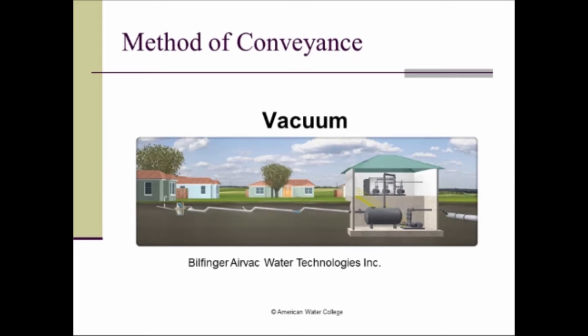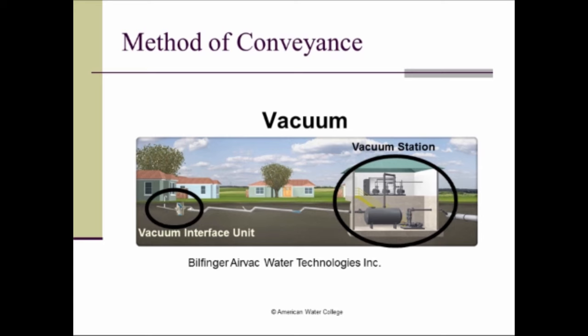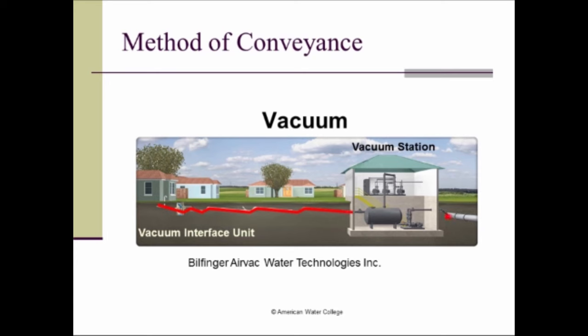The last system is the vacuum system. In the vacuum system, a vacuum station provides the low pressure that serves as the motive force to draw the wastewater in one direction. Near the residence, we have the vacuum interface unit, which interfaces between the gravity portion of the building sewer and the vacuum system on the municipal side. The vacuum station provides the force that draws the wastewater to the wastewater treatment plant.